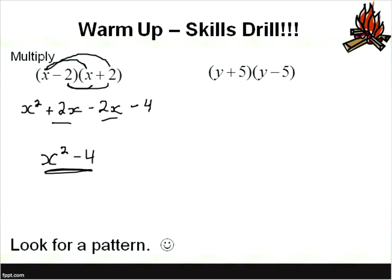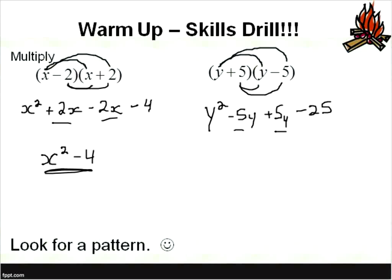Let's go to the second one. We're going to again use the distributive property. Y times Y is Y squared, Y times negative 5 is negative 5Y, 5 times Y is 5Y, and 5 times negative 5 is negative 25. These two middle terms are the same: negative 5Y plus 5Y cancel out, leaving no Y's. So we're left with Y squared minus 25. Do we see any patterns? We were able to completely eliminate the middle term.